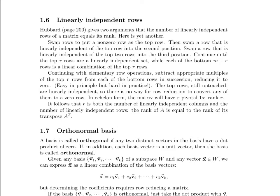Let's talk about linearly independent rows for a second. In your textbook Hubbard, you're given two arguments that the number of linearly independent rows of a matrix equals its rank, or the number of linearly independent columns. Here's another one. You can do an example on the side. It's not really necessary, but it's good to sort of understand how this works.